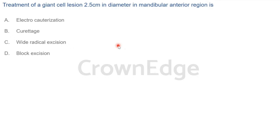Next question: Treatment of a giant cell lesion 2.5 centimeters in diameter in the mandibular anterior region. It is not a very large lesion. Options include block excision, wide radical excision, electrocautery, and plain curettage. We don't need to worry about lower border integrity since 2.5 cm is not that large. The answer is plain curettage.